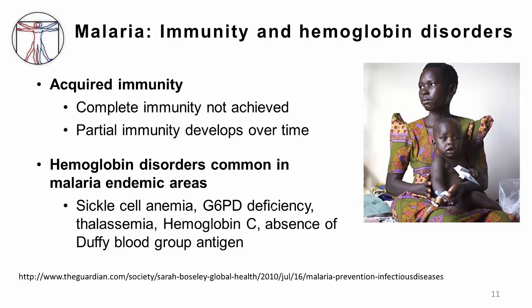Over time, evolution has helped to combat malaria to some degree. Certain genetic mutations have led to things like sickle cell anemia, G6PD deficiency, thalassemia, hemoglobin C, and loss of the Duffy blood group antigen, which all have different levels of protection against plasmodium infection. And obviously they tend to be more common in regions where there is still high rates of malaria.